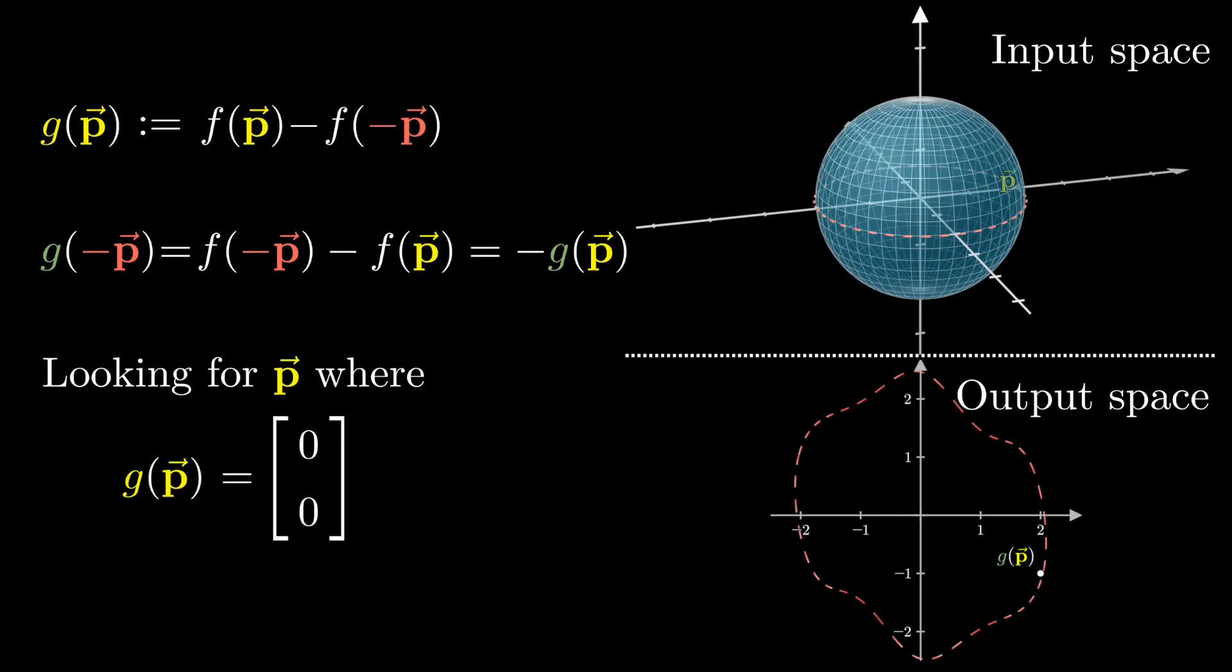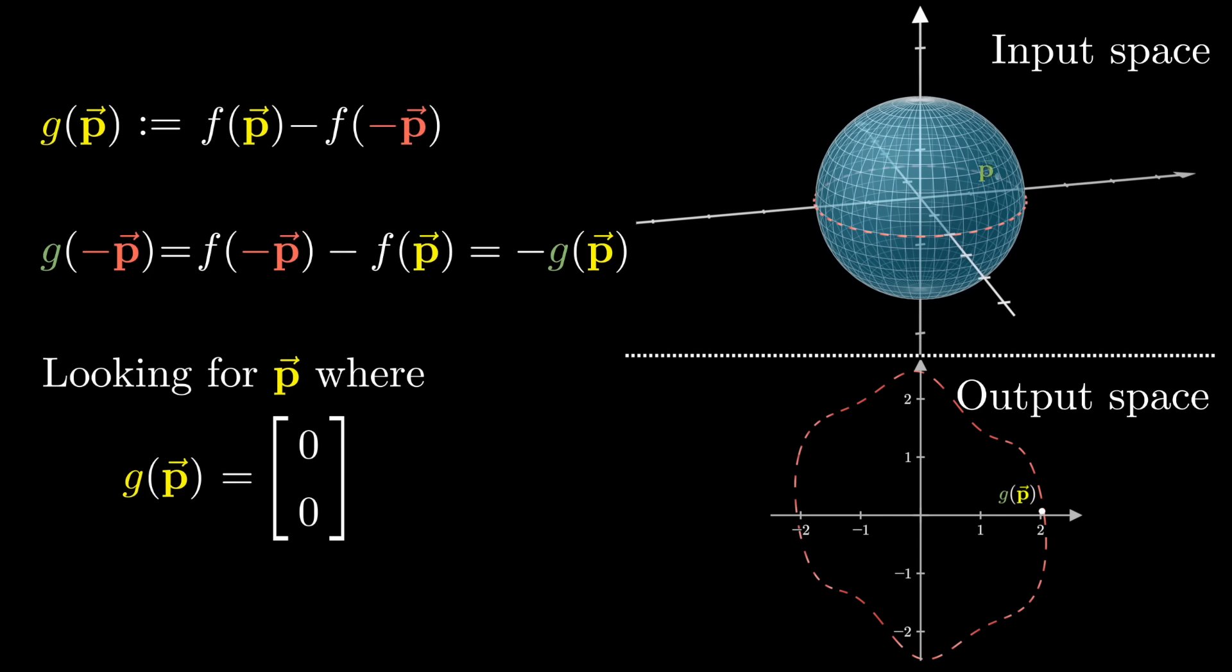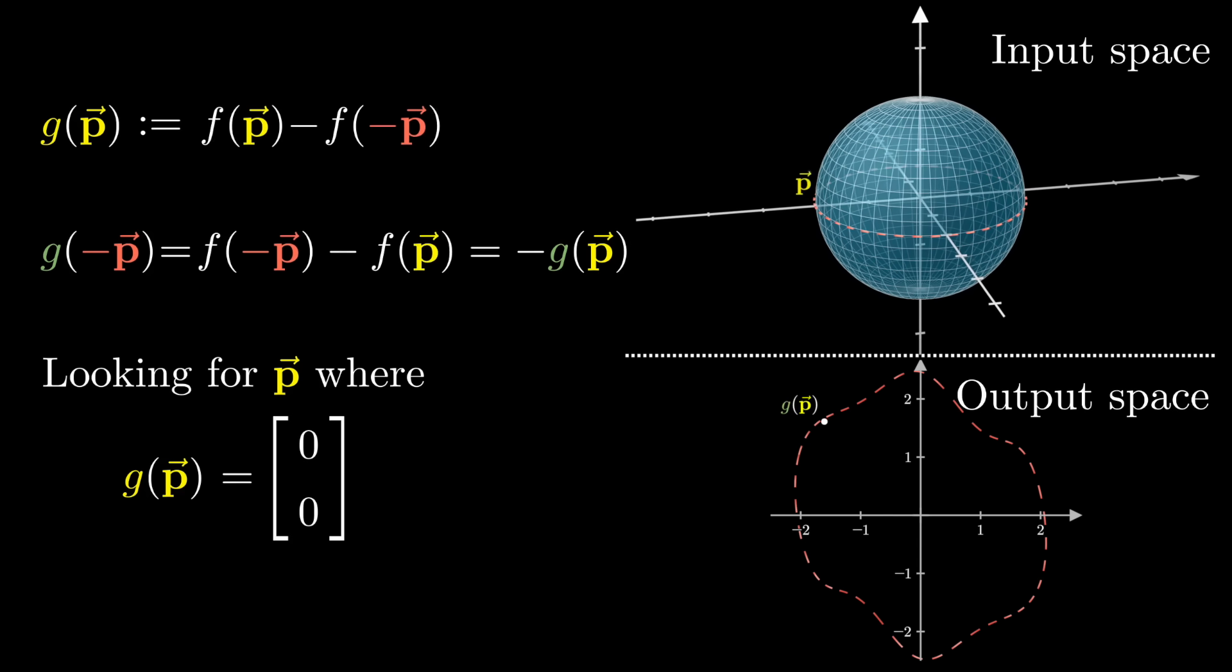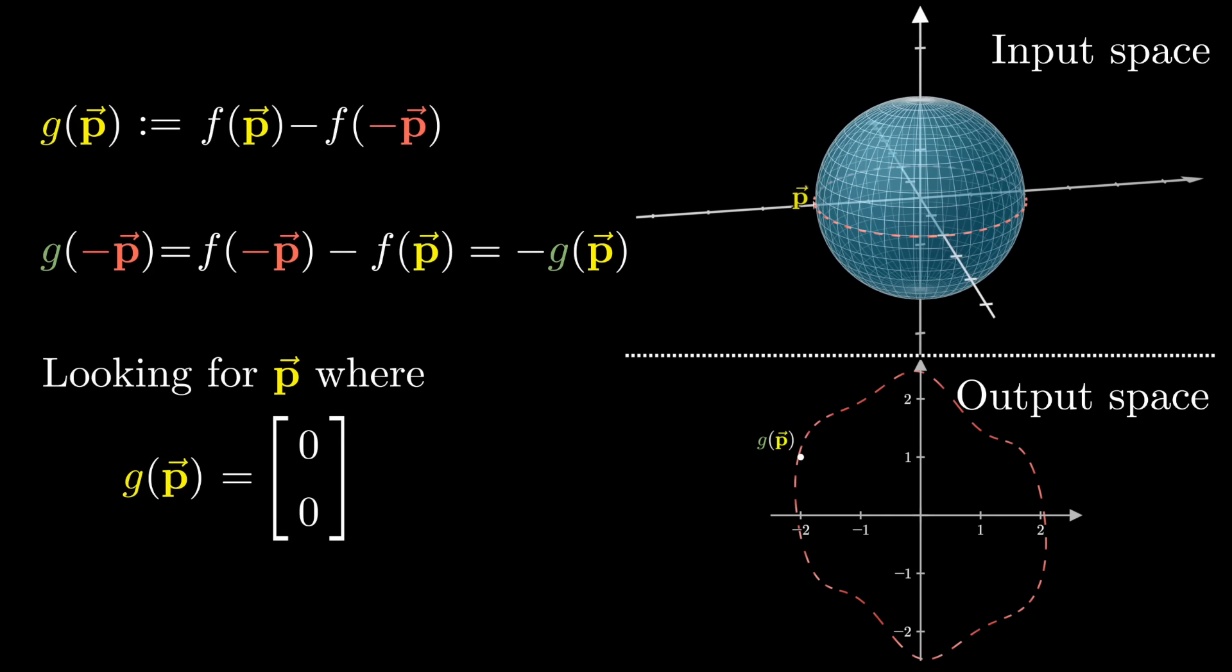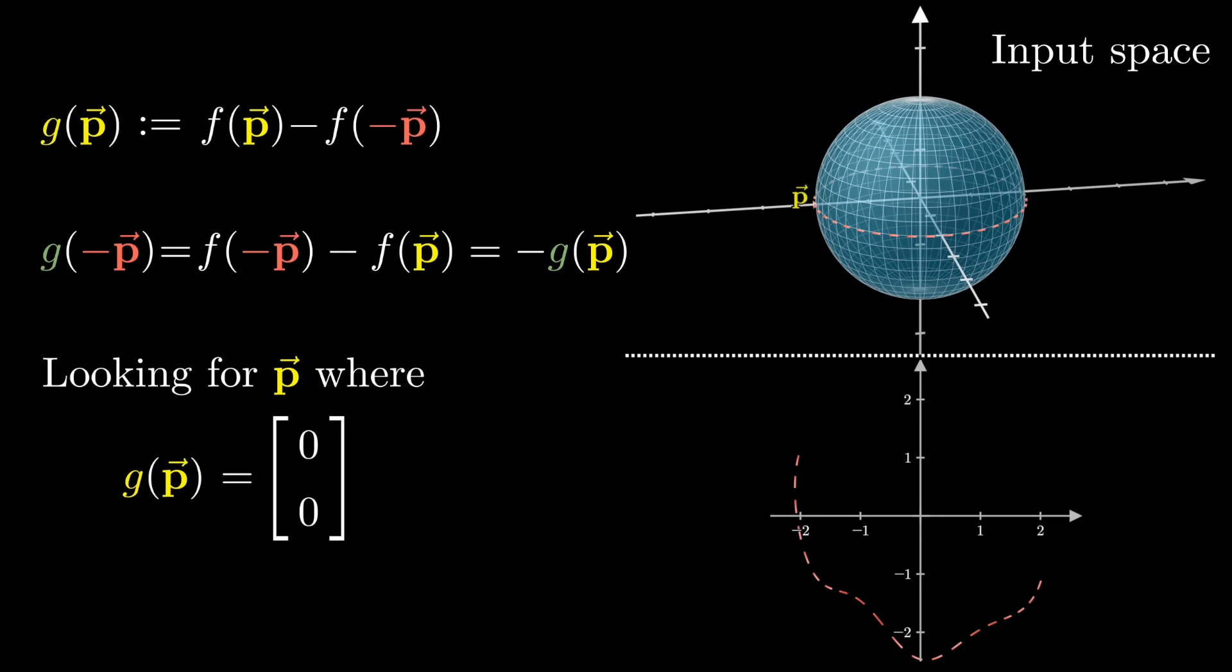as you continue walking around the other half, the second half of your output path must be the reflection of the first half, or equivalently, it's the 180 degree rotation of that first path.